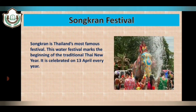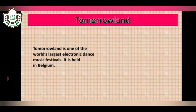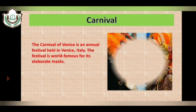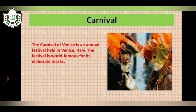Then we have the Songkran Festival. Songkran is Thailand's most famous festival. This water festival marks the beginning of the traditional Thai New Year and is celebrated on 13 April every year. Next is Tomorrowland, one of the world's largest electronic dance music festivals, held in Belgium. The last one is the Carnival of Venice, an annual festival held in Venice, Italy. The festival is world famous for its elaborate masks.